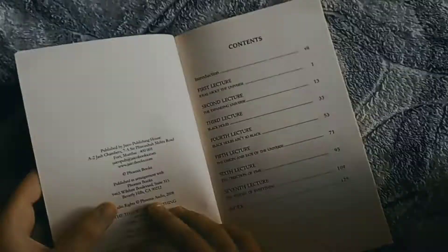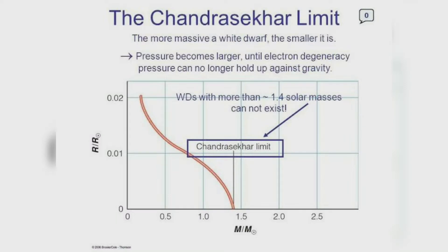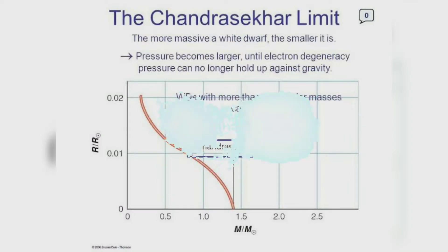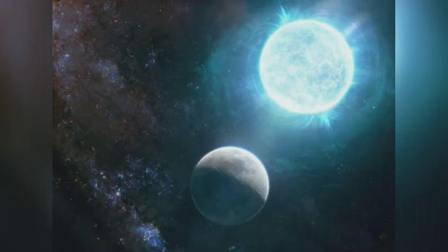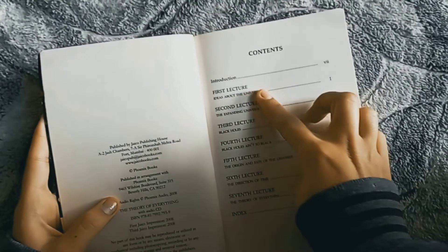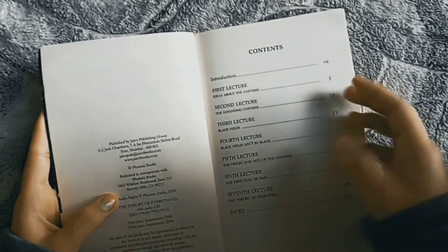If you guys don't know, the Chandrasekhar limit is the maximum mass of a stable white dwarf star. Whether a star will become a black hole or not — this is decided by the Chandrasekhar limit.